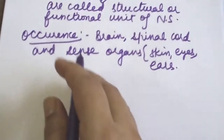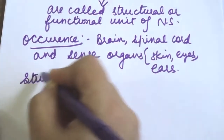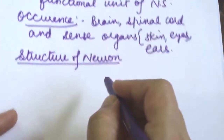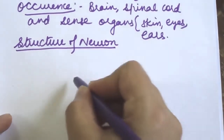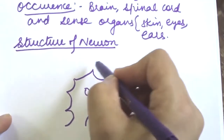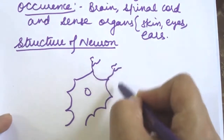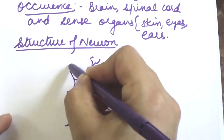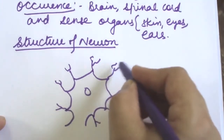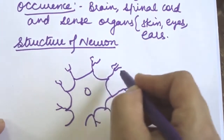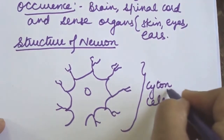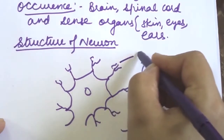Now let us discuss the structure of each neuron. Here I will draw the structure. First, we will discuss the cell body, also called the cytone. These are the dendrites extending from the cell body.